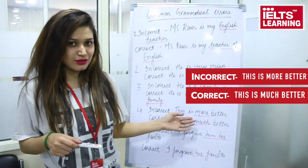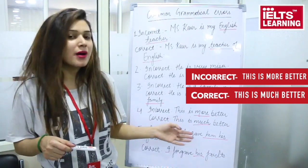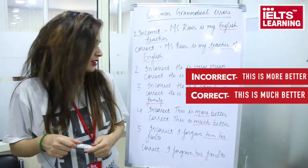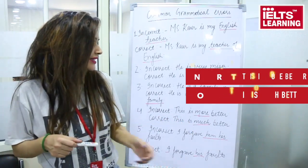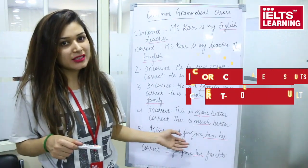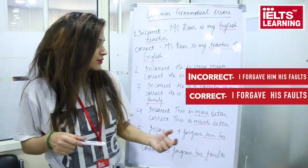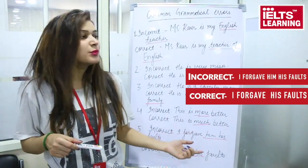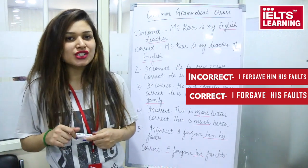The fourth example says 'this is more better,' which is incorrect because 'more' is used with countable nouns. The correct form is 'this is much better.' The fifth and last example says 'I forgive him his fault,' which is incorrect because both words are specifying the same person.